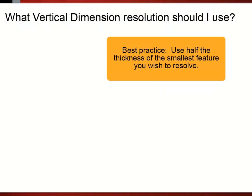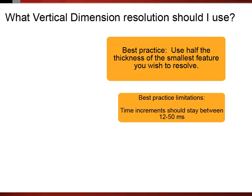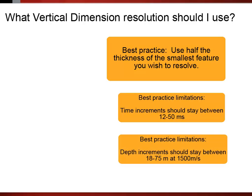To choose your resolution for the vertical time or depth dimension, there is a similar rule of thumb. Use half the thickness of the smallest feature you wish to resolve. Time increments between 12 and 50 milliseconds are appropriate for Decision Space. For depth, the limit is between 18 and 75 meters at 1,500 meters per second. Grids with thickness less than this are not recommended.